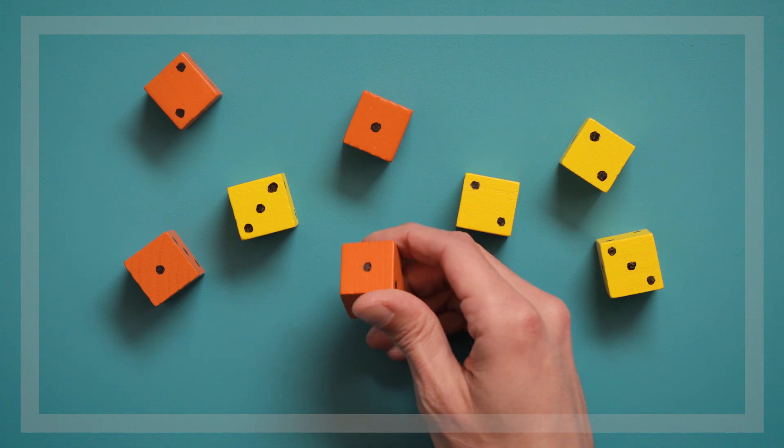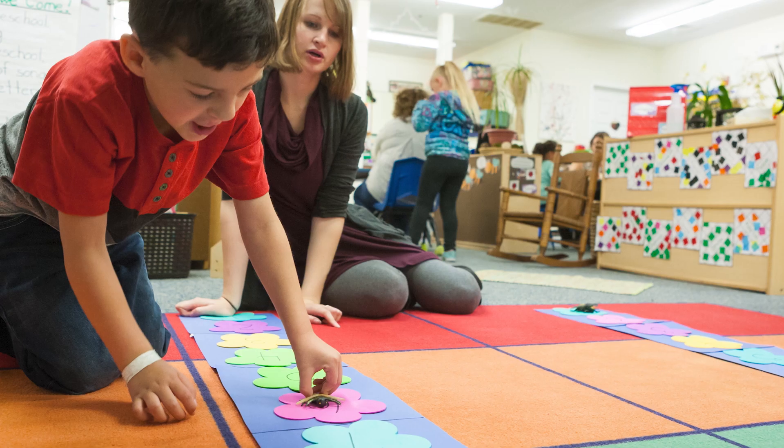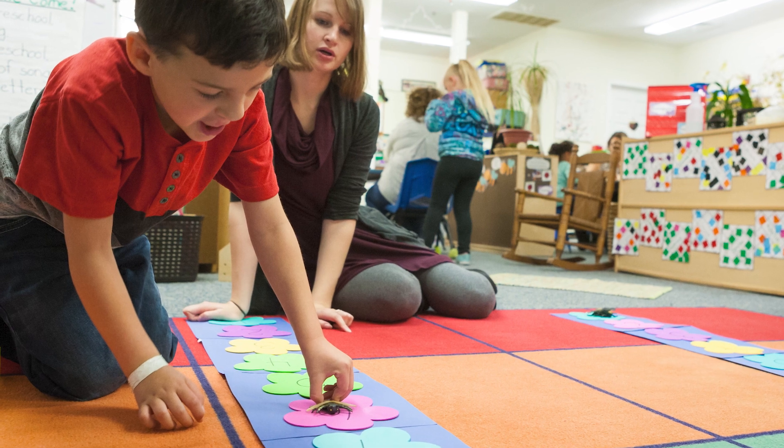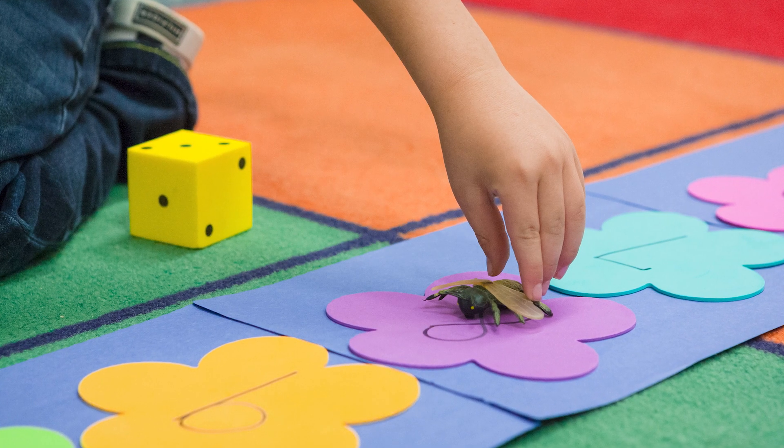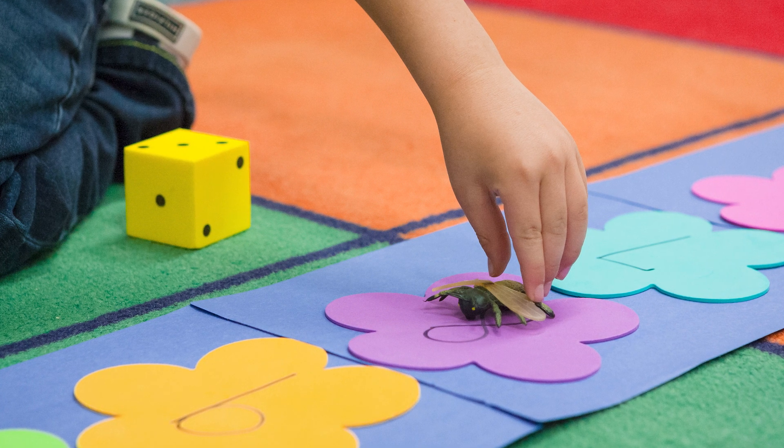Kids love rolling dice and hopping frogs, but you can change the theme of this game to anything your child is interested in. It could be jumping on dinosaur prints or jumping on flowers with a butterfly or a bee. Whatever topic is interesting to your child.